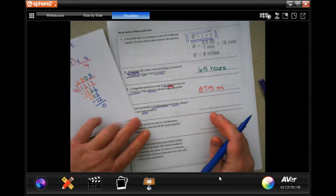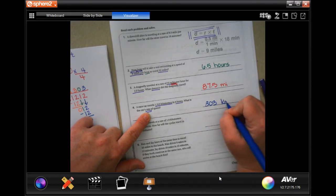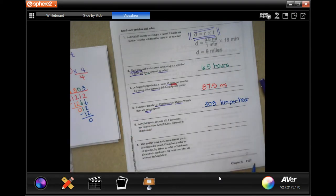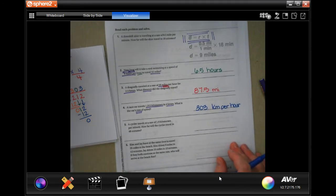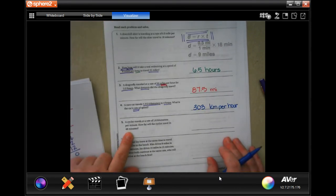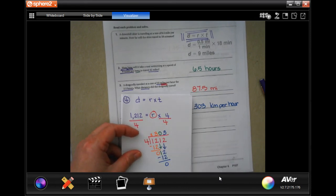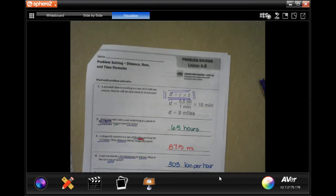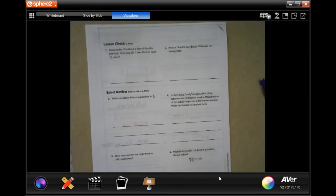So, our answer, what's the rate of speed? It's going to be 303 kilometers per hour. Pause it. Write your work down. You guys are going to do 5 and 6. You totally can. I believe in you. Use the formula and plug in the distance, the rate, and the time. You guys do 5 and 6, and then on the back, you guys are going to do a lesson check just like always, and I'm going to help you through spiral review.